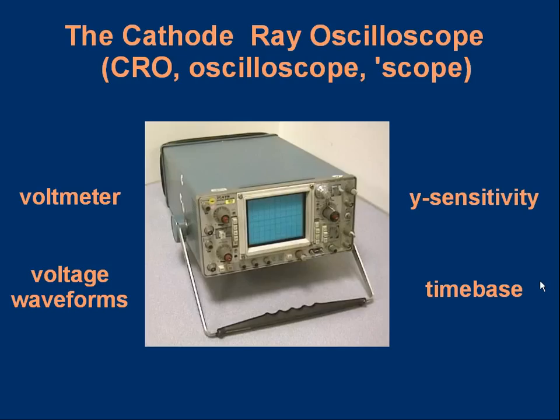Hello, welcome to this lesson on the cathode ray oscilloscope, sometimes called a CRO, or an oscilloscope, or a scope. We can use this device as a voltmeter and to measure voltage waveforms, that means voltage time graphs. It's got some other uses as well, but let's stick to these.